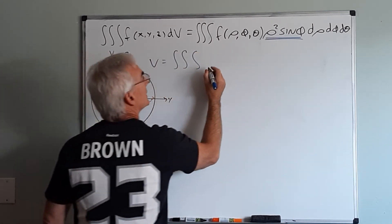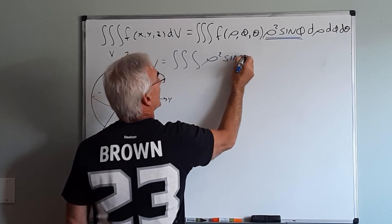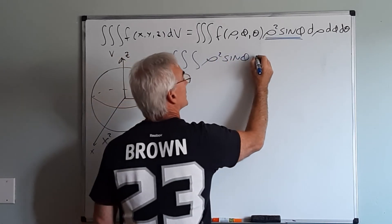the volume will be the integral, in this case we'll introduce the rho squared sine phi, because that's our only part of the integrand.